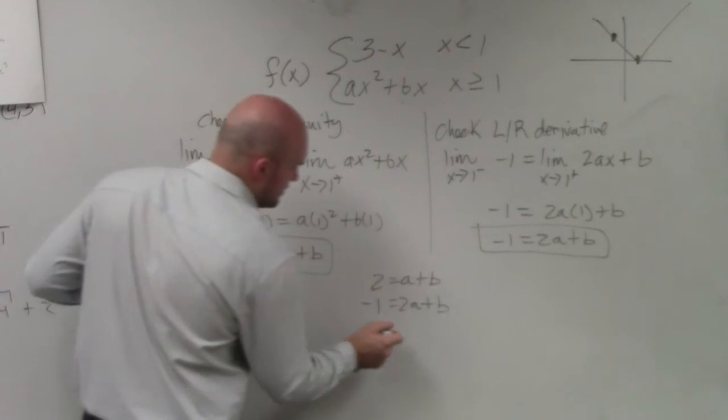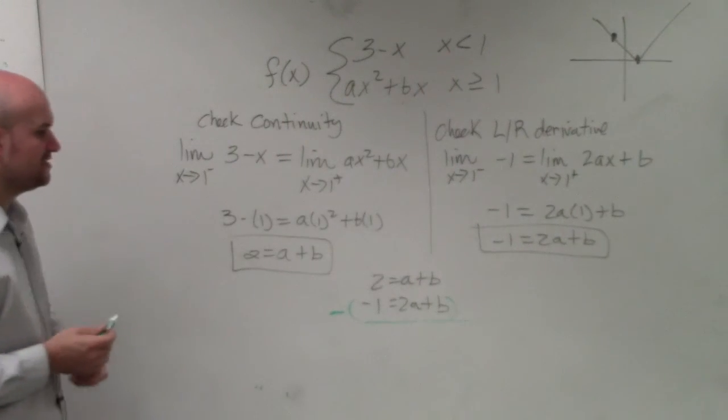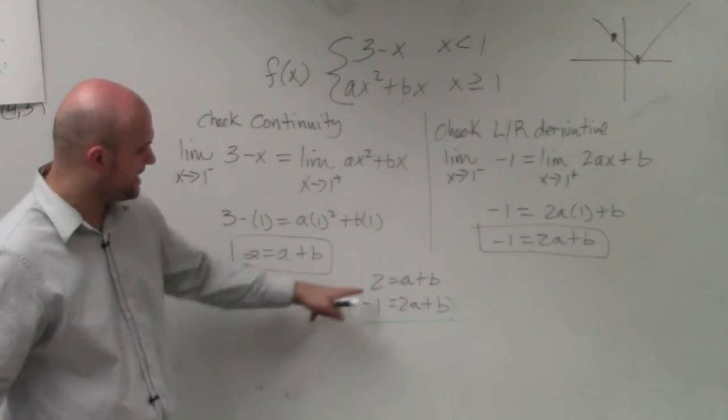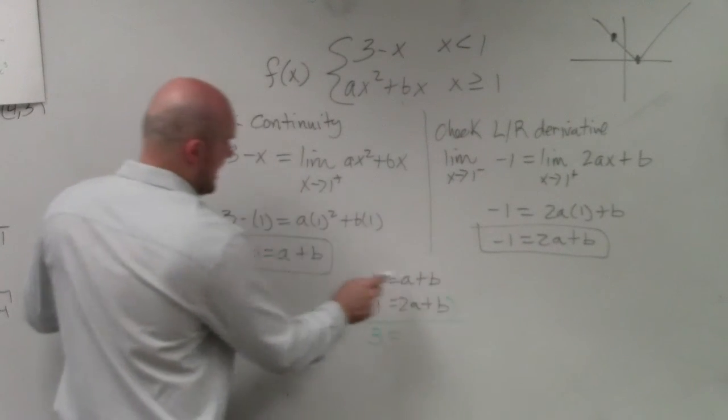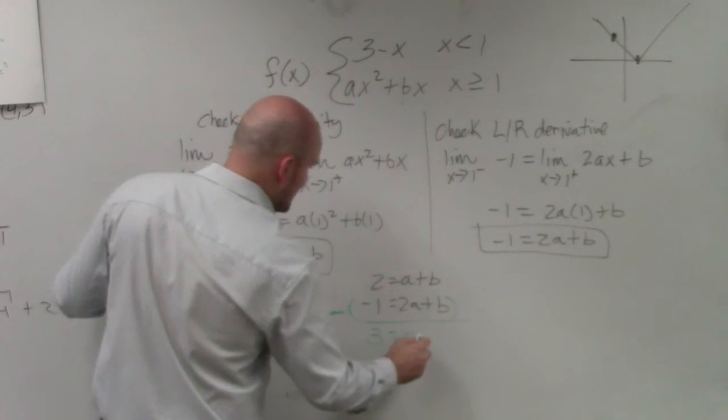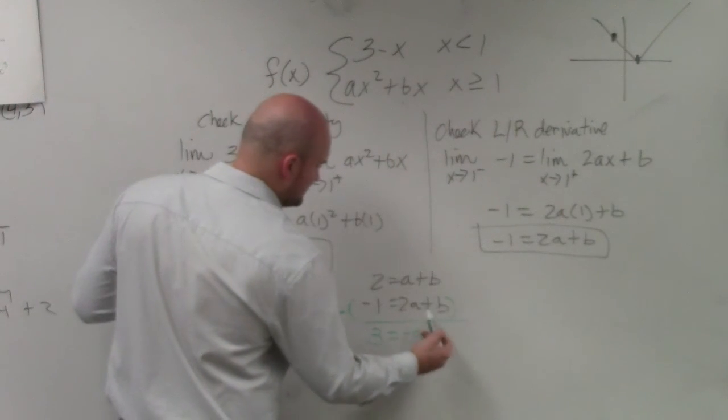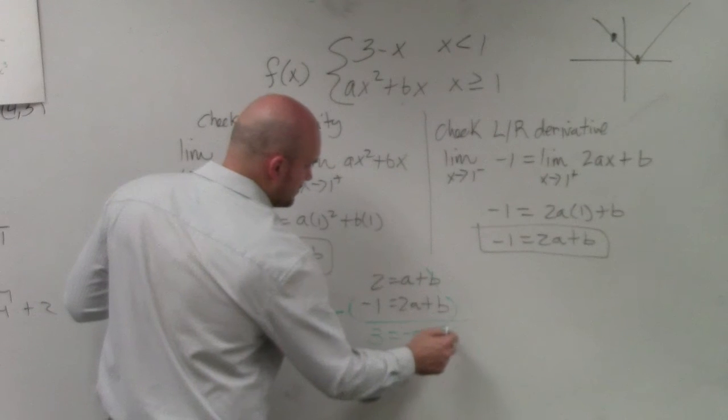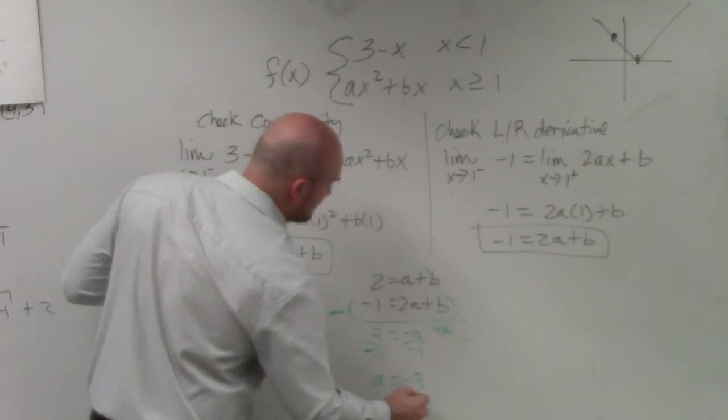You can subtract the bottom row from the top row. Just make sure you follow the same operation. 2 minus a negative 1 is going to be a positive 3. a minus 2a is going to be a negative a. And b minus b is going to equal 0b. Divide by negative 1. Divide by negative 1. a is equal to negative 3.